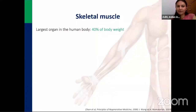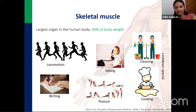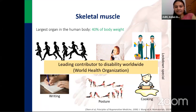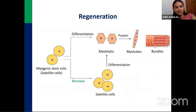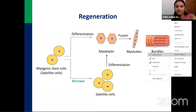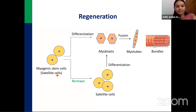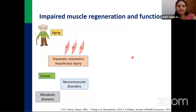Good morning everyone. Today I'll talk about our ongoing work on an in-vitro disease model for skeletal muscle degeneration. Skeletal muscle forms the largest organ of the human body, comprising 40% of body weight, and is involved in all functions we carry out. Any disability or ailment of skeletal muscle disease can lead to a big compromise in human body function, making skeletal muscle diseases a leading contributor to disability across the world, as stated by the World Health Organization.